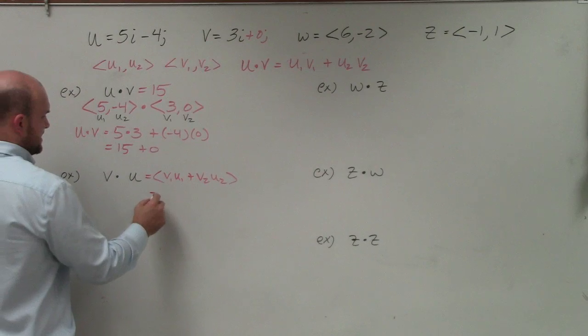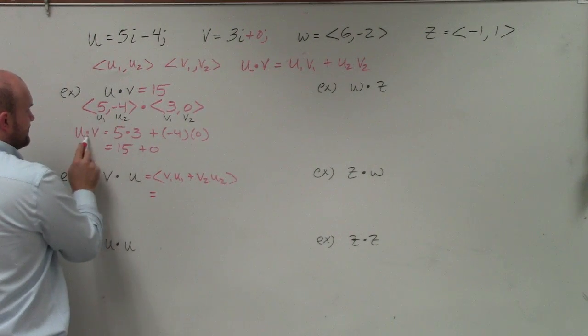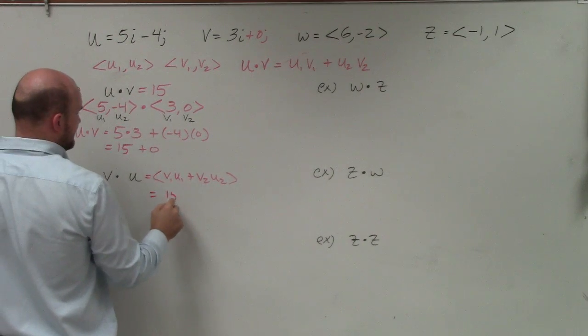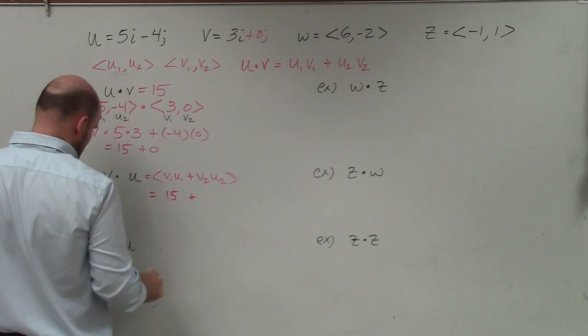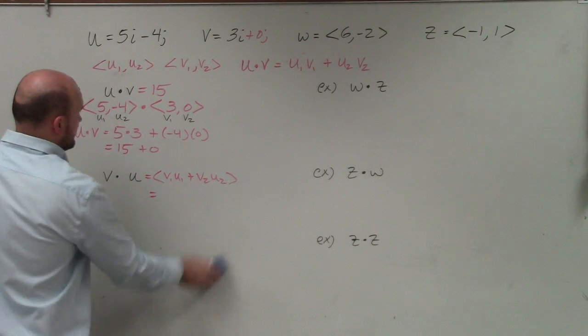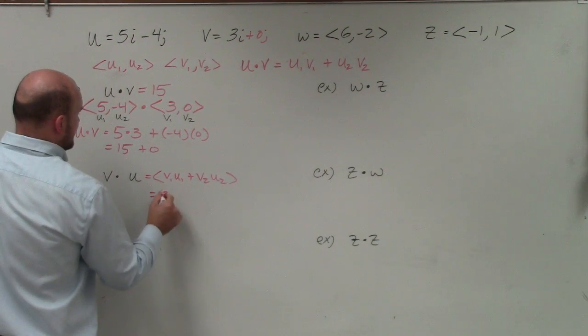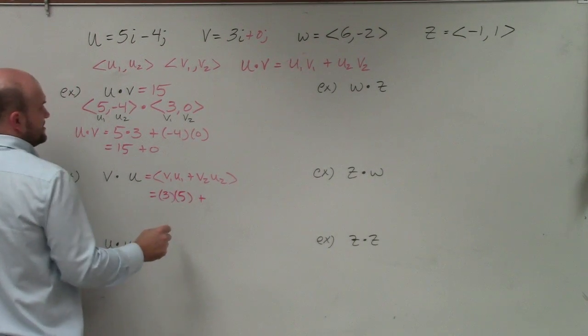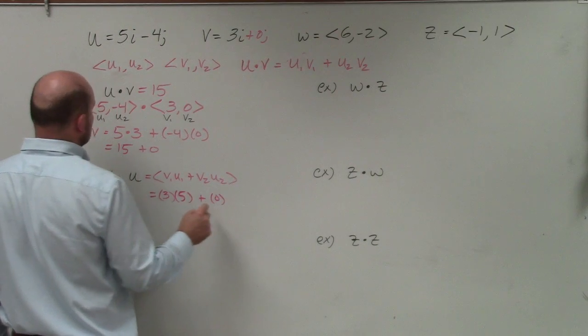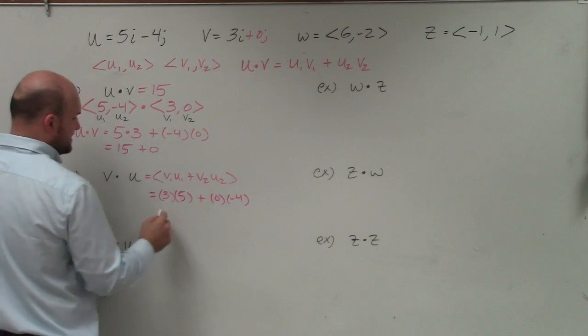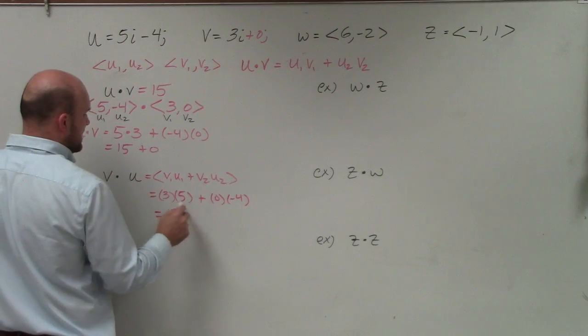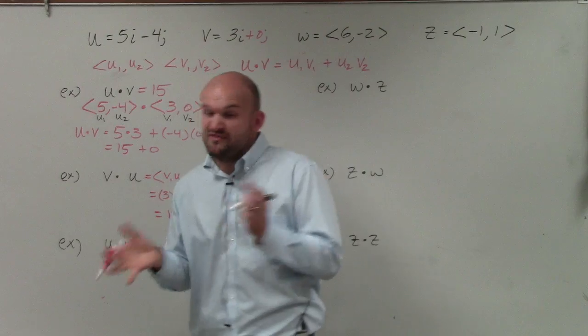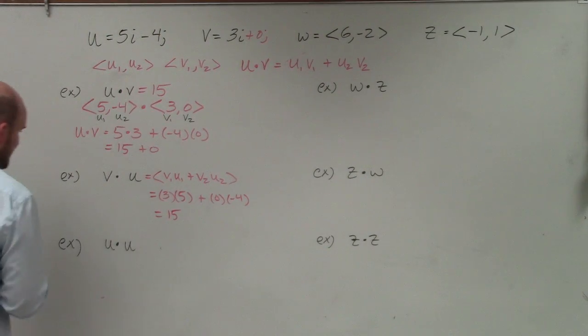So let's just kind of look at this then again. If we have v1 times u1, v1 is 3 times u1, which is 5. So again, that's going to give me 15. Plus, actually let's just write it out. So v1 is 3 times u1 is 5 plus v2, which is 0 times u2, which is negative 4. And you can see again our product, our dot product is going to give a resultant of 15. So therefore what that should tell us is it doesn't matter if we do how the vectors are arranged, the dot product is going to give us the same value.